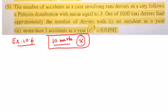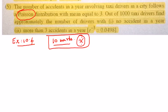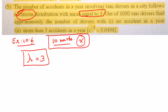They say that the number of accidents in a year involving taxi drivers follows a Poisson distribution. Yes, so it follows Poisson. And the mean is equal to 3. Okay, so the average number of accidents in a year is equal to 3. So in Poisson, mean is lambda. So I say lambda is equal to 3.